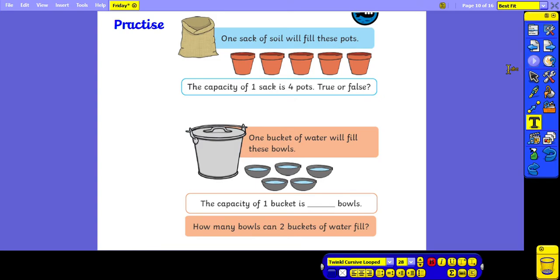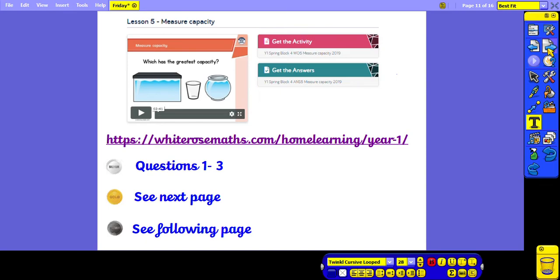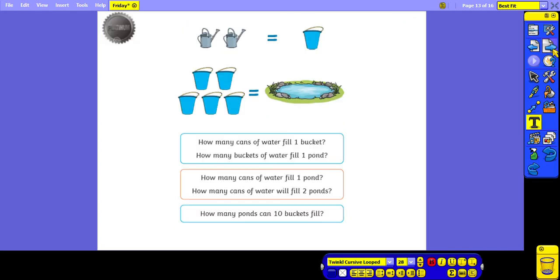So there are a couple of questions for you to practice there, and then you can move on to the White Rose questions one to three for silver, before moving on to the gold and platinum challenges.